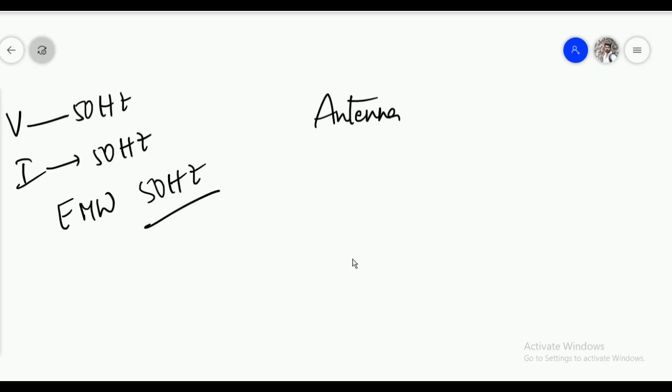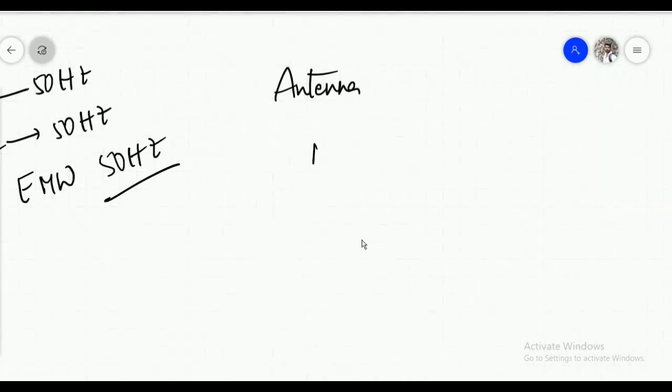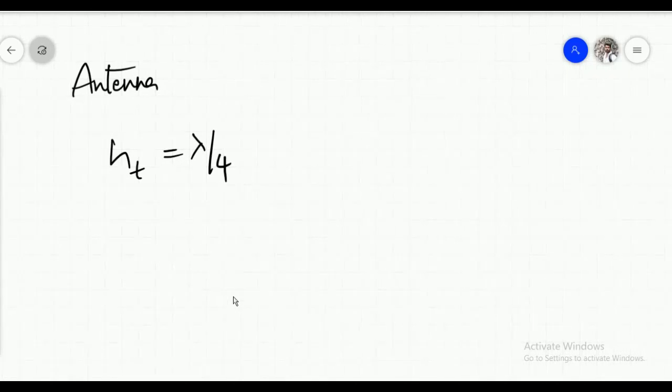Now my question is at what height this antenna should be placed to transmit this 50 Hertz. And we have a basic thumb formula that is height of the transmitter, I mean antenna, will be equal to lambda by 4. Lambda is the wavelength of the wave which you want to transmit.